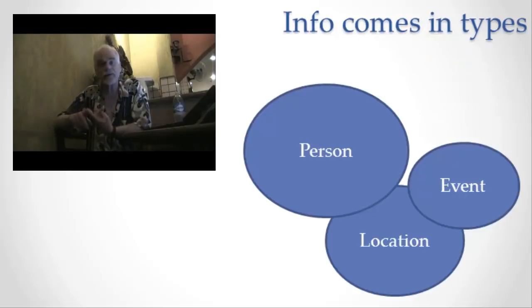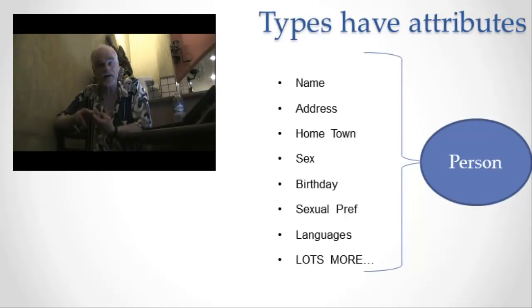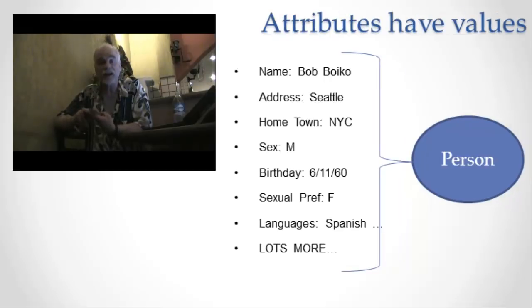Information comes in types like people on Facebook. Those types have attributes like the name attribute. The attributes have values like Bob Boyko.